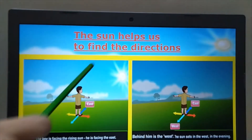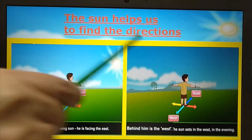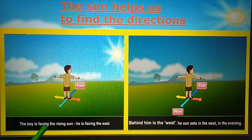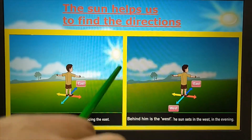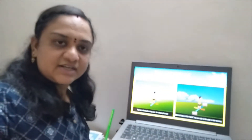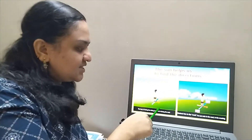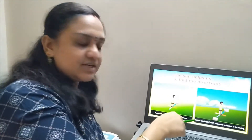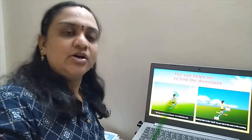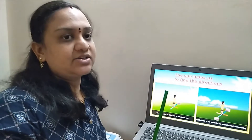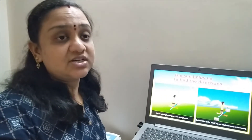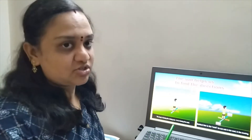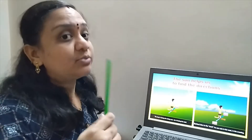The sun helps us to find the directions. The boy is facing the rising sun. When will the sun rise? In the morning. The boy is facing the rising sun and he is stretching both his hands. When we are facing the rising sun, we are facing east because the sun rises in the east. The sun rises in the east direction every day, and that is why we take the help of the sun to find the directions. Because the sun rises every day, we face the direction in which the sun is rising.